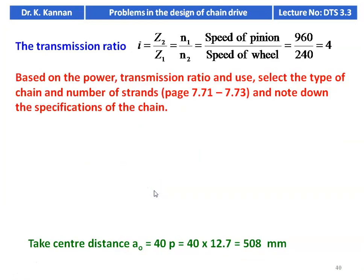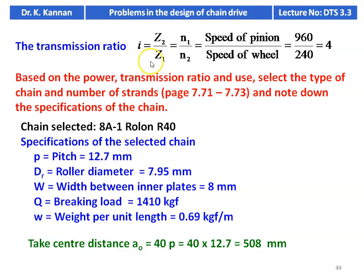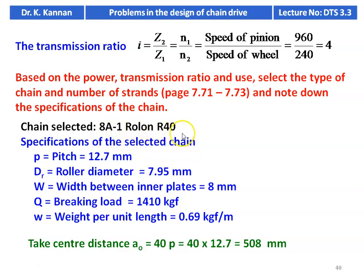Transmission ratio I = Z2/Z1 = N1/N2 = 960/240 = 4. Based on the power, transmission ratio, and use, we select the type of chain and number of strands. We select 8A1 roll-on R40 — R stands for single strand, so it is a single strand chain of the 8A1 series.